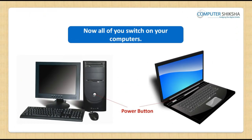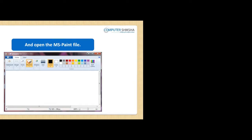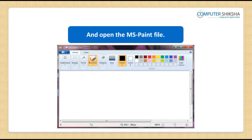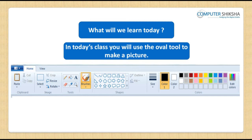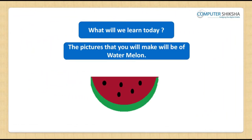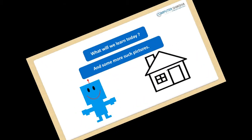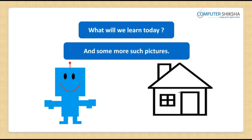Let us now begin today's class. Power on your computers and open the MS Paint file. In today's class, you will use the oval tool to make pictures. The pictures you will make will be of a watermelon, a teddy bear, and some more.